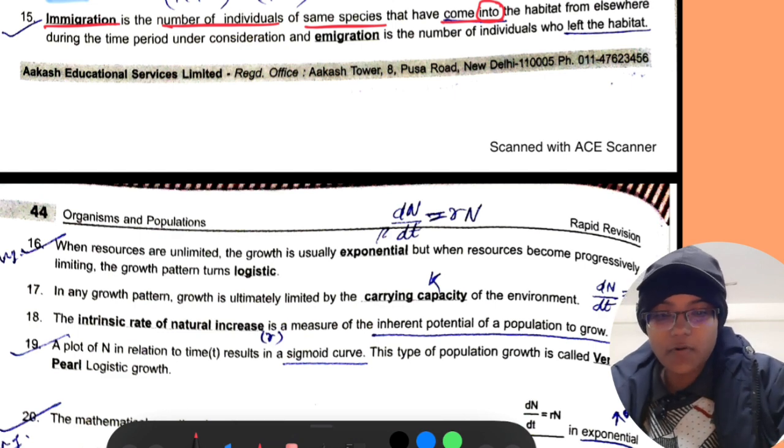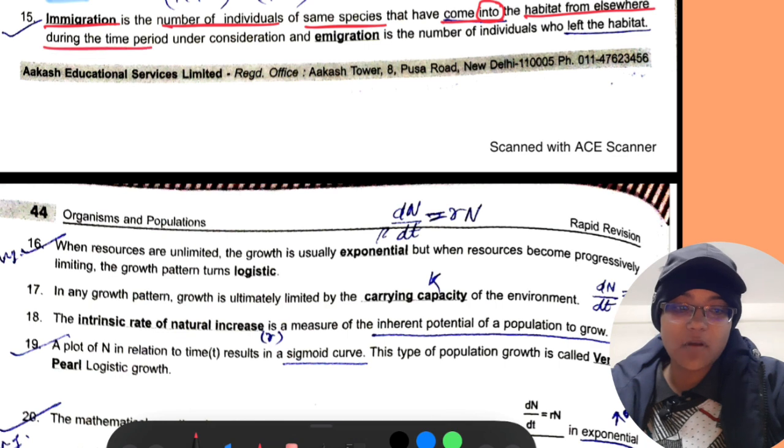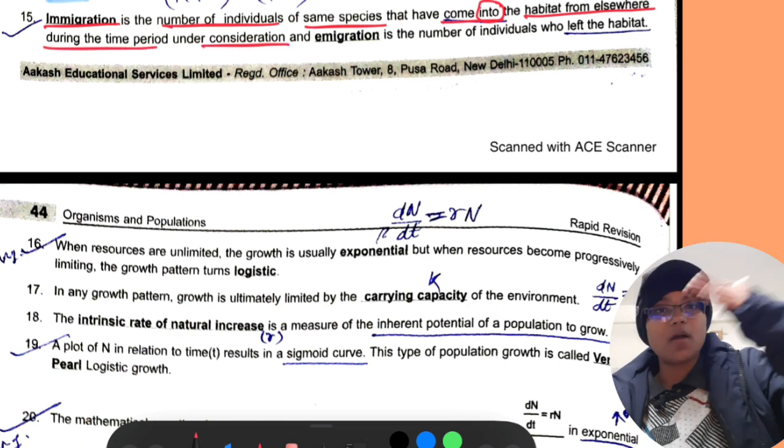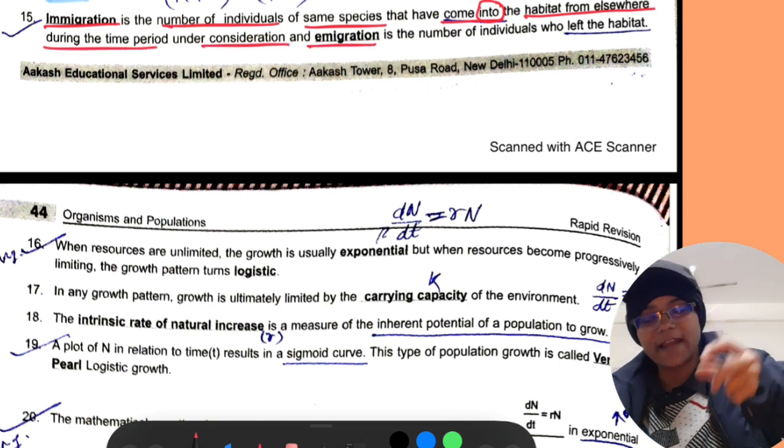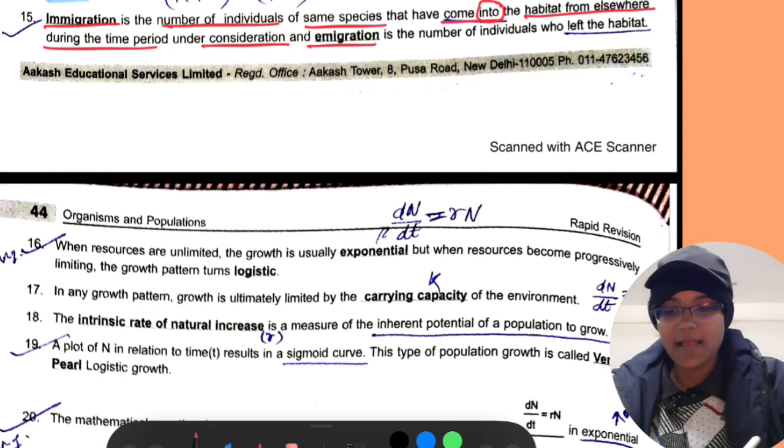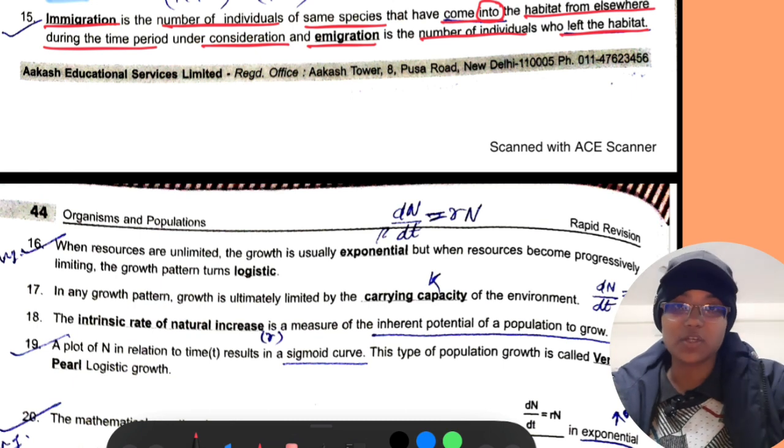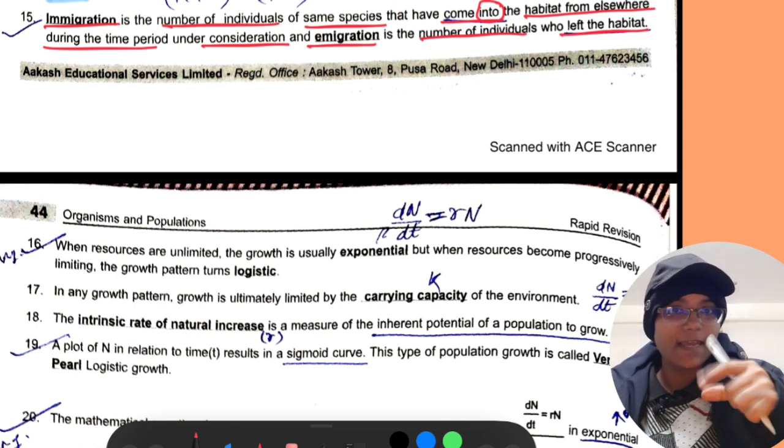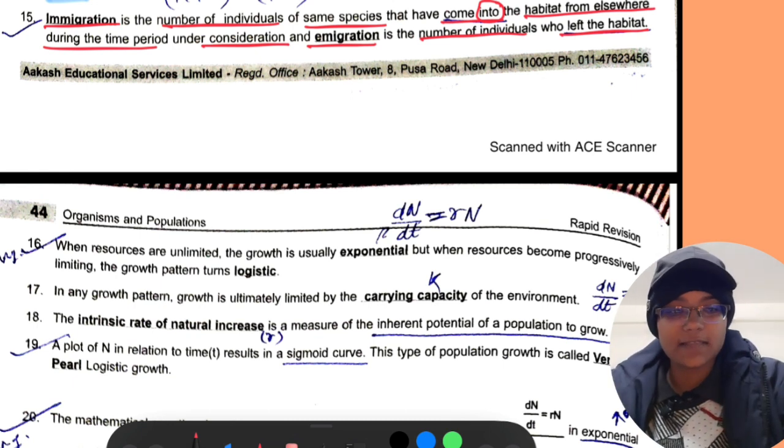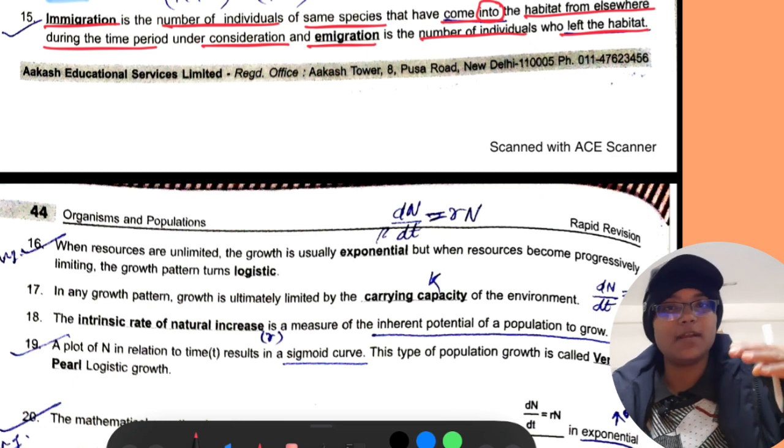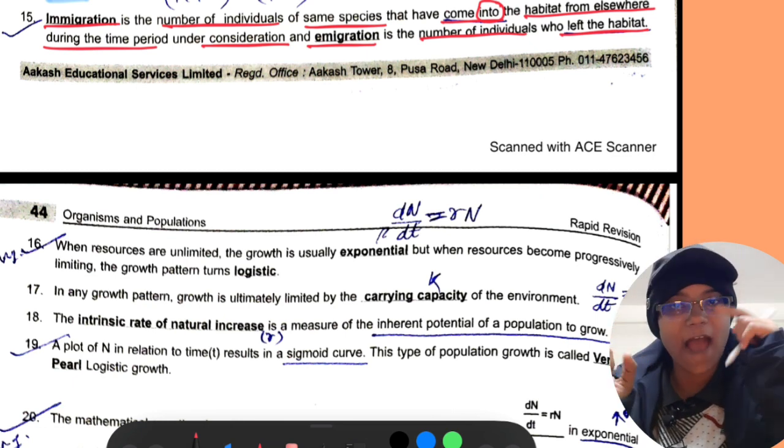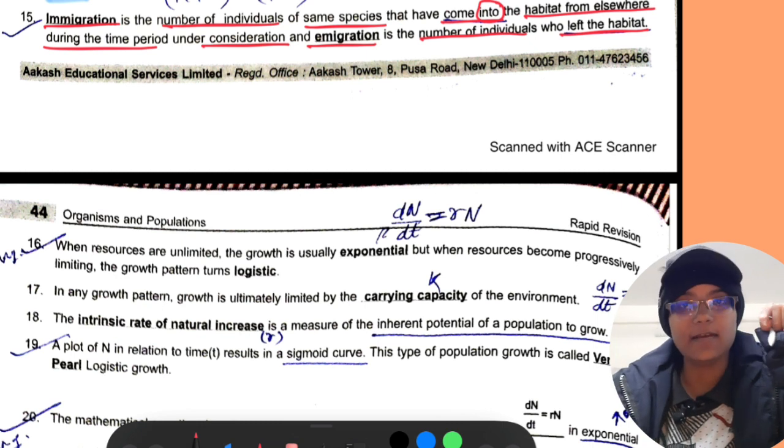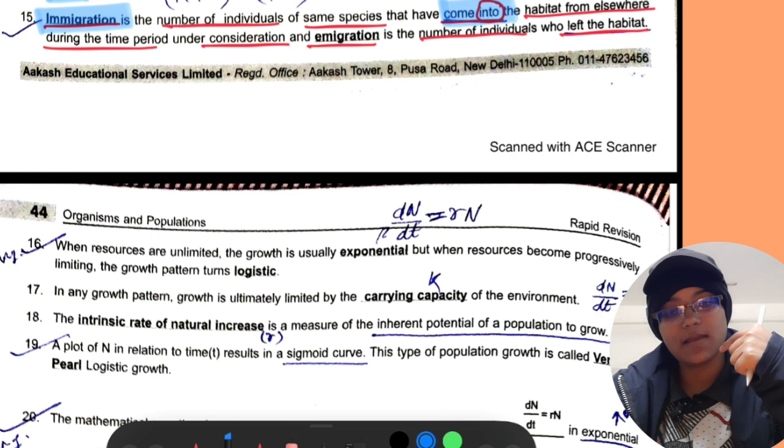Immigration is the number of individuals of some species that have come into the habitat from elsewhere during the time period under consideration, and emigration is the number of individuals who left the habitat.